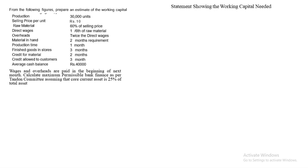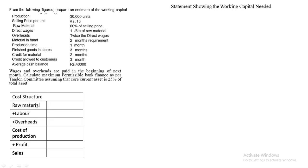To solve the sum, start with Working Note 1 — the cost structure to get all rates. Selling price per unit = ₹10. Raw material = 60% of ₹10 = ₹6. Direct wages (labor) = one-sixth of raw material = ₹6 ÷ 6 = ₹1. Overheads = twice direct wages = 2 × ₹1 = ₹2. Cost of Production = ₹6 + ₹1 + ₹2 = ₹9. Profit = ₹10 − ₹9 = ₹1. Cost structure is complete.